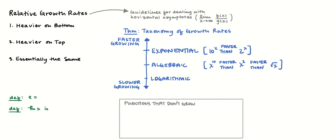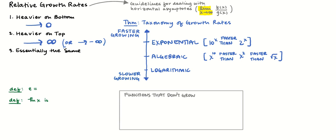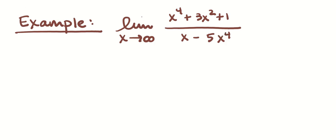If it's heavier on the bottom — bigger or faster on bottom — the limit is going to 0. If it's bigger on top, the limit is going to positive infinity or negative infinity. These are limits as x approaches infinity. If they're essentially the same, it's going to go to the ratio of the leading coefficients. In your previous algebra 2 class, you saw this type of rational function and were asked about horizontal asymptotes. You identified the highest power on top and bottom; if it was the same, you divided the leading coefficients.